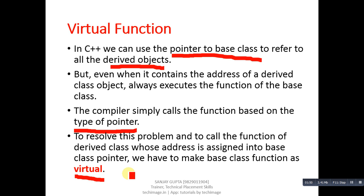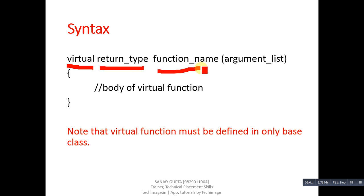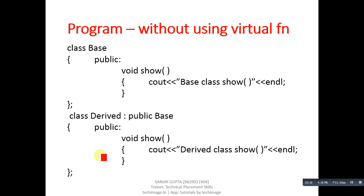To resolve this problem we use the virtual keyword inside the base class function. The syntax is: virtual keyword, then return type of function, then name of the function, and then the argument list. Inside the curly braces you define the virtual function. Note that virtual functions must be defined only in the base class.